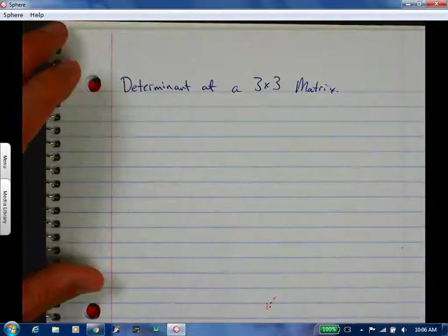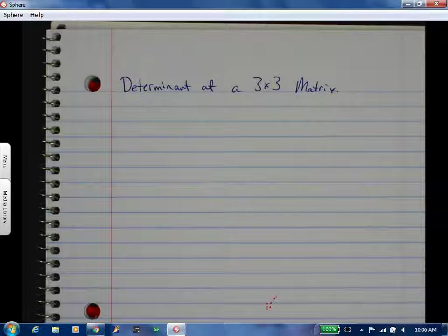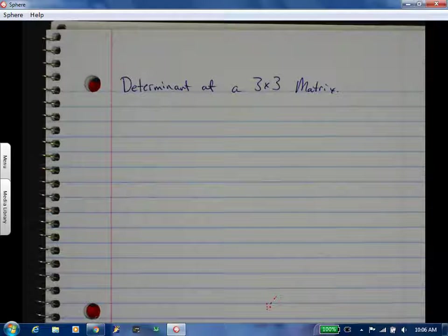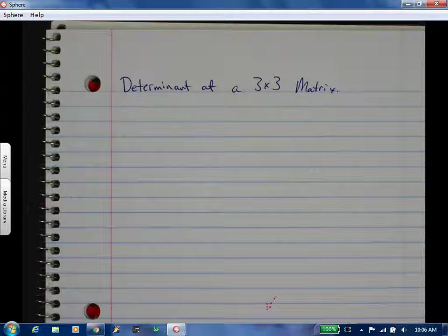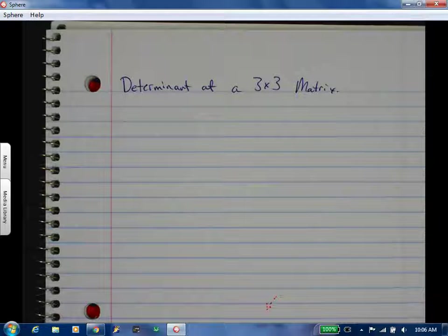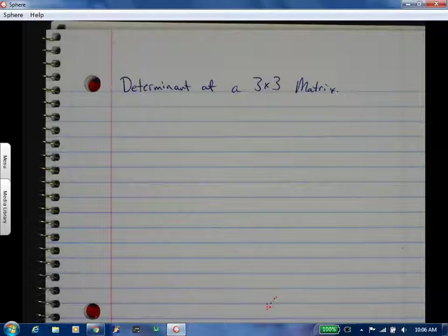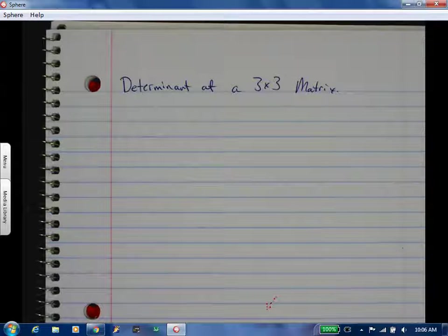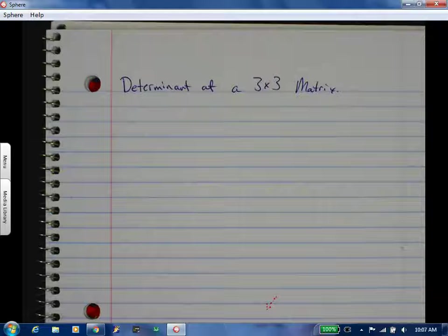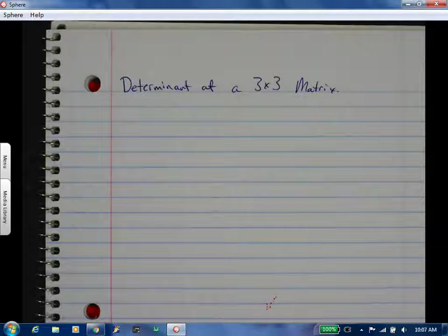One cool thing that can happen is you can use this determinant to find what we're about to do. If you have a triangle on the coordinate plane, you can use the determinant of a 3x3 matrix to find the area of the triangle. You don't have to go base times height or anything like that. A lot of times that is used in land surveys because they can just do the ordered pairs.